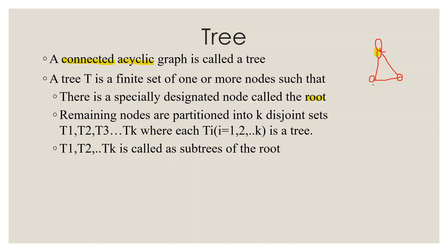Looking at the formal definition again: the tree is a finite set of one or more nodes. There is a specially designated node called the root — one node has a special designation as the root node. The remaining nodes are partitioned into different sets, and those sets are called subtrees T1, T2, ... TK.